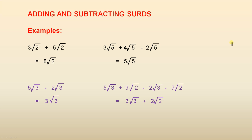Adding and subtracting CERDs. Some examples: 3 times the square root of 2 plus 5 times the square root of 2 equals 8 times the square root of 2. This is very similar to adding like terms, because we have the square root of 2 and the square root of 2 as like terms. All we do is add the 3 and the 5, just like in algebra. So 3 plus 5 is 8, giving 8 times the square root of 2.